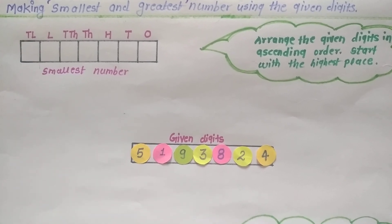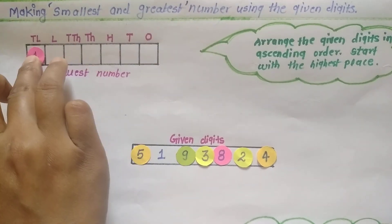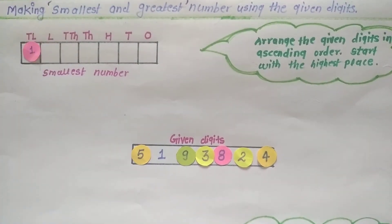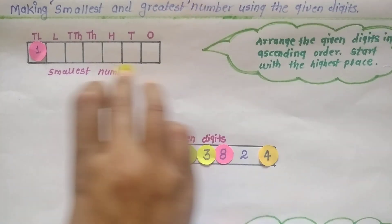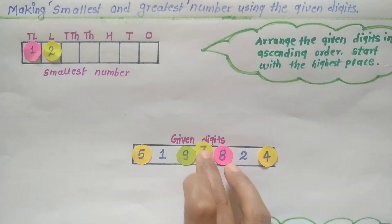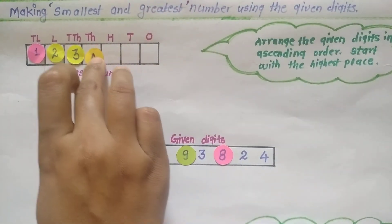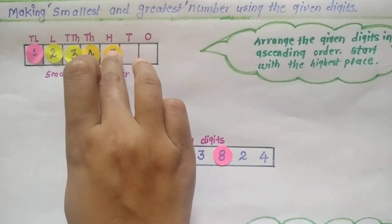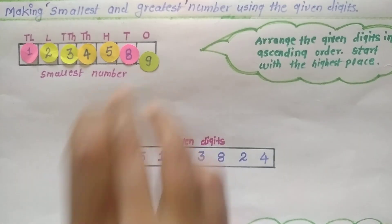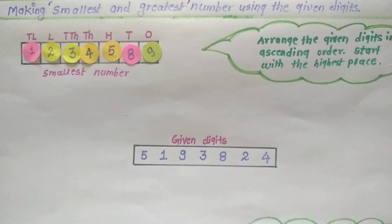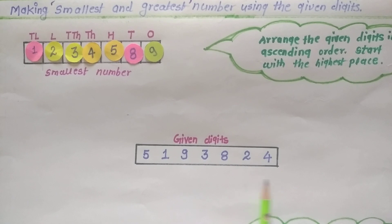Now I start placing the digits at the highest place. First I place the digit 1 at 10 lakh, as 1 is the smallest digit. Then I place 2, then 3, then 4, then 5, then 8, and at the last 9. So this is the possible smallest number formed using the given digits.